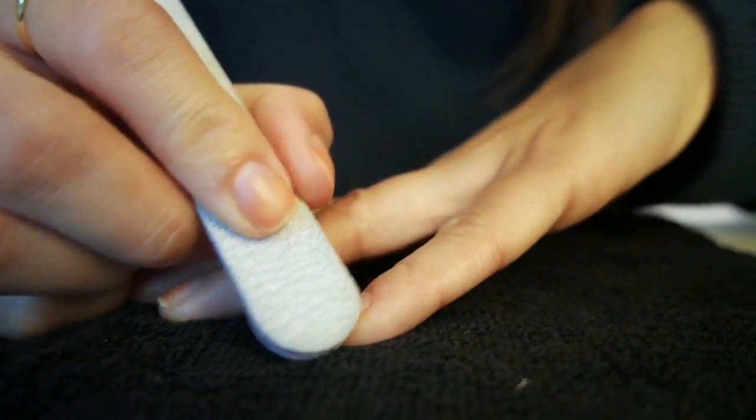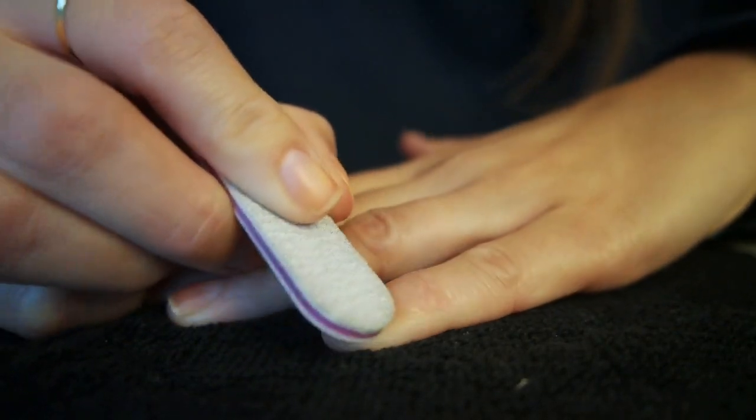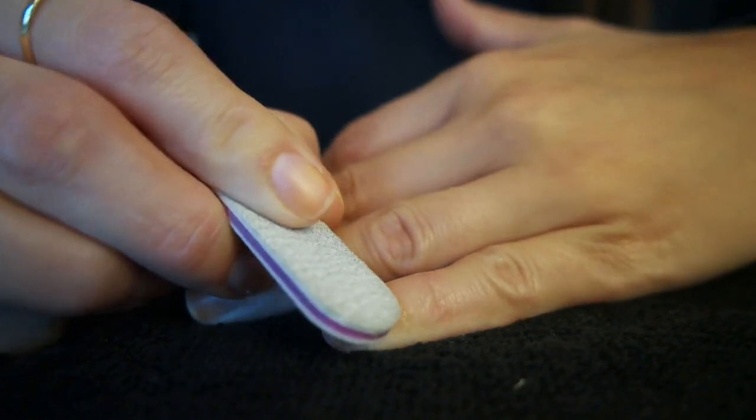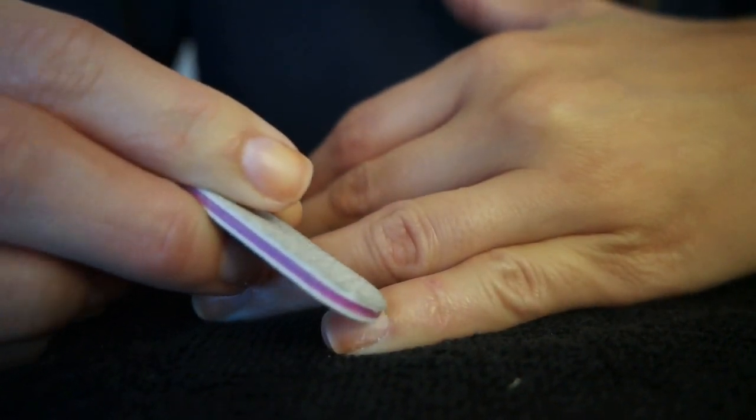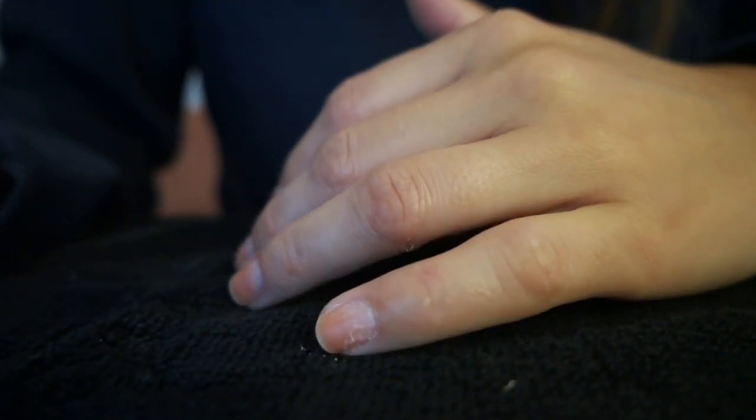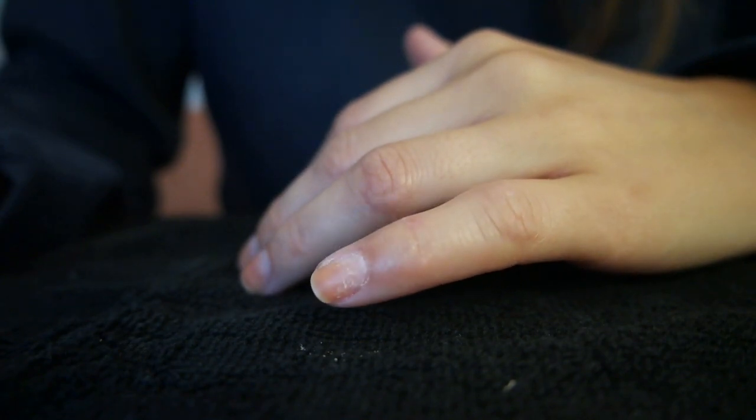We're going to start with a 100 over 180, really coarse file, and we're going to begin scuffing up the perimeter of the nail—just around the cuticle area and up the sides. This is going to help the polish adhere, stick, and last.